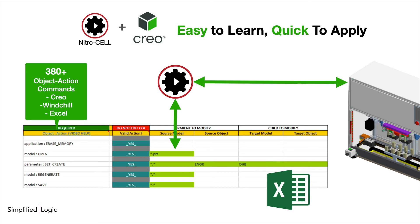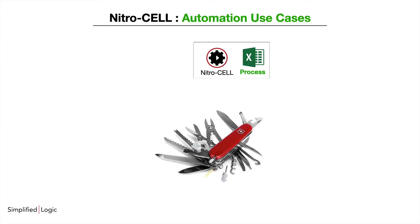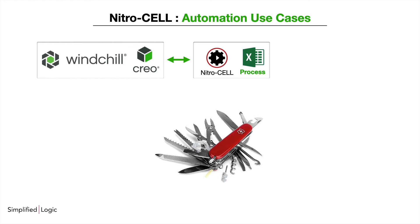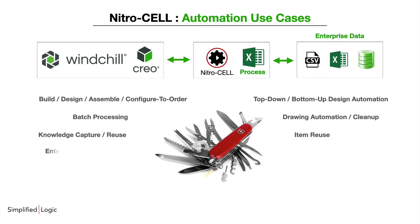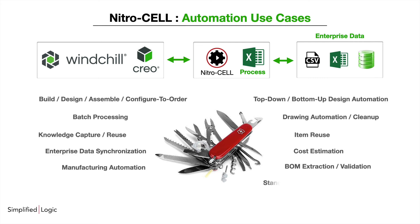As you can see here, it is very easy to understand what it's doing and how it's doing it. It's an interface that connects Excel to your Creo session and allows you to perform these automations with ease. Most of our customers use NitroCell to connect to Windchill and Creo, tie in enterprise data, and do everything you see here and more.